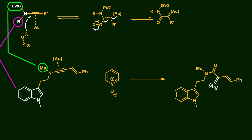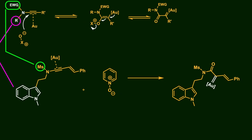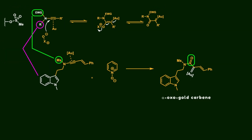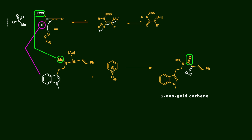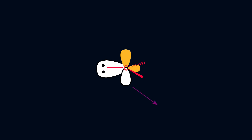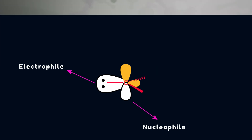Treatment of this compound with pyridine N-oxide and a gold complex introduces a carbonyl group into the system, generating an alpha-oxo-gold carbene. There are two possible pathways for this transformation. Recall from introductory organic chemistry that a carbene center has two perpendicular orbitals: an empty orbital that can accept electrons from a nucleophile, and a filled orbital that can attack an electrophilic center.